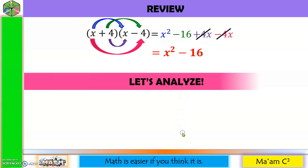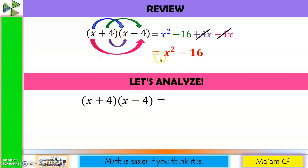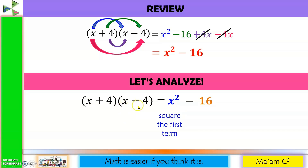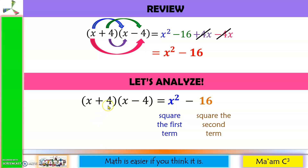Now let us analyze. The quantity x plus 4 times x minus 4 is equal to x squared minus 16. Where does x squared come from? It is actually the square of the first term. It doesn't matter which binomial you choose because the first terms are the same. How about the 16? It is the square of the second term — we have 4 and 4, so the square of 4 is 16.